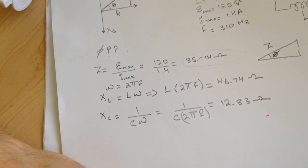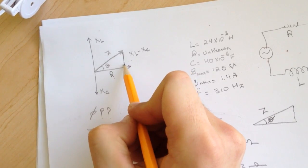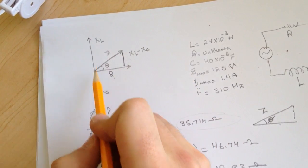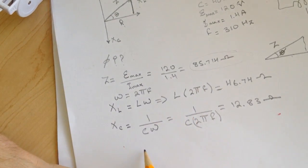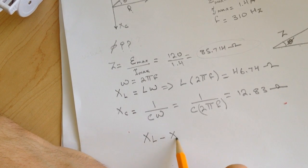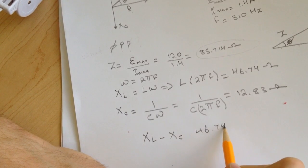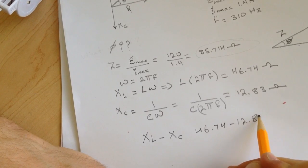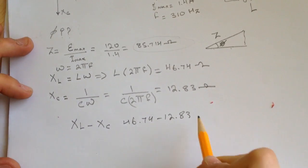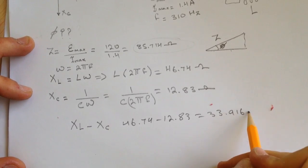All right, so we need to find this vector here. We go back to here. We need to find this vector now. We need to take this minus this. So XL minus XC, and it is 46.74 minus 12.83. And for this I got 33.916 ohms.